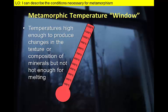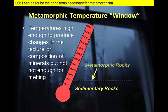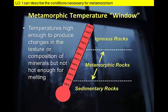Temperature is a key factor in determining the changes that occur in a rock. If temperatures are too high, the minerals in the rock will melt to produce magma that will form an igneous rock. If temperatures are too low, the reactions necessary to change the rock won't take place. So we can consider metamorphism to take place in a temperature window of approximately 200 to 800 degrees Celsius.